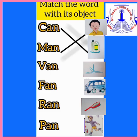Very good. The next word is V, A, N — van. V, A, N — van. Children, search for the van object. Yes, it is just below the fan. Match the van word with the van picture.